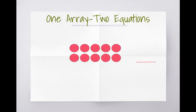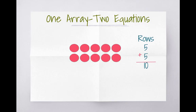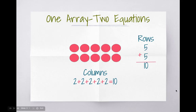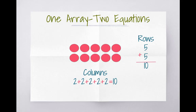So we had one array and two very different equations. For our rows: five plus five equals ten. For our columns: two plus two plus two plus two plus two equals ten. It looks like we can use repeated addition to help skip count. If I skip count my rows I count: five, ten. If I skip count my columns I count: two, four, six, eight, ten. Arrays can help us add, multiply, and skip count!